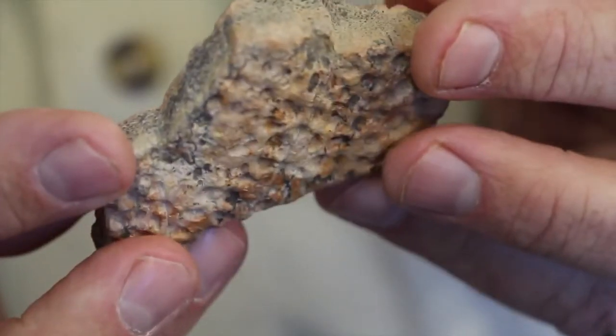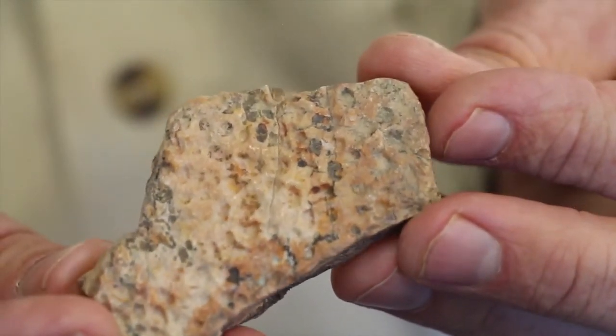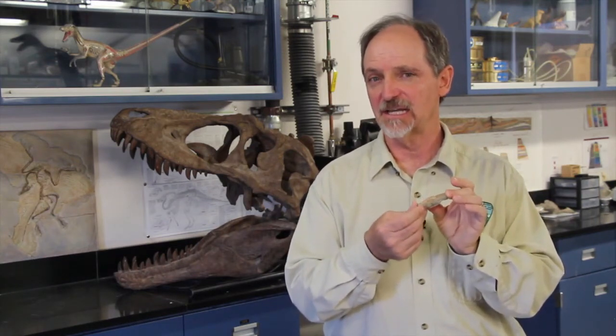We have an example here of a piece of turtle shell. This is the original shell that was in the living turtle. However, it doesn't feel like the original shell that was in the living turtle. It actually feels like a rock. And that's because this shell is filled with rock-forming minerals, things like silica and calcium carbonate.